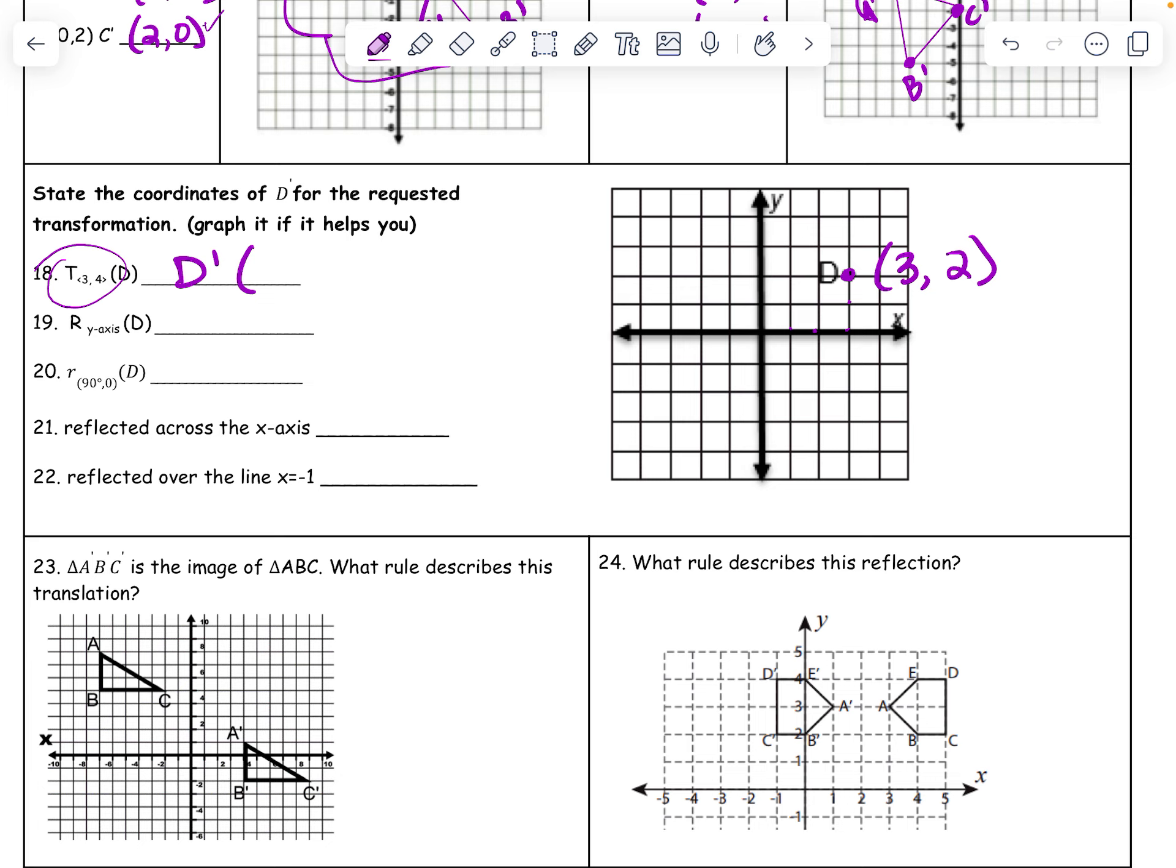It's going to become plus 3, plus 4. That's me showing my work here, y'all. D prime is at 6, 6. No, you don't need to show all that work. Yes, I'm just trying to kind of help you out a little bit.